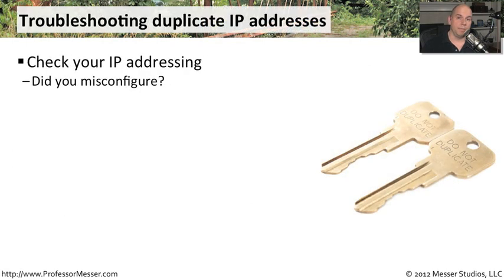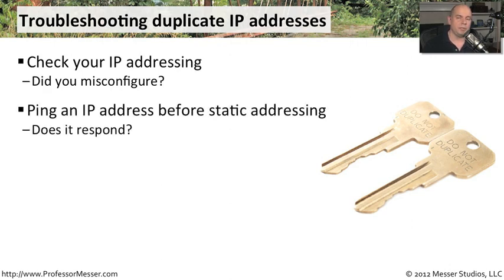One of the more common places where you can make a mistake with duplicate IP addresses is in the initial configuration. If you are statically assigning IP addresses to a device, just double-check and make sure that you didn't make a mistake when you inputted the IP address, the subnet mask, the default gateway, or any of the other parameters. That's a common mistake to make, but it's a very simple one to resolve. You might also, before you use that IP address, go to another system on the network and ping that address just to see if anything else will respond back, so you can know immediately that it is not an IP address you should be using for another device.